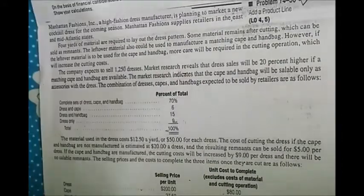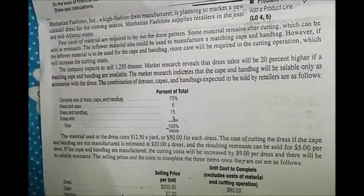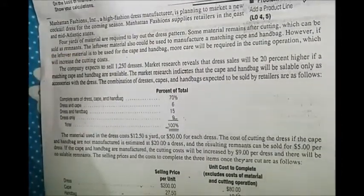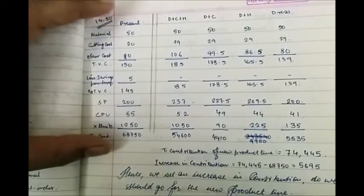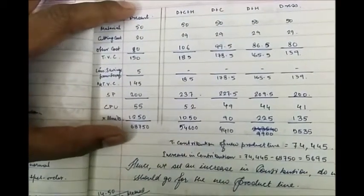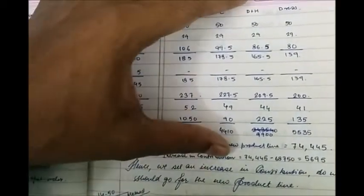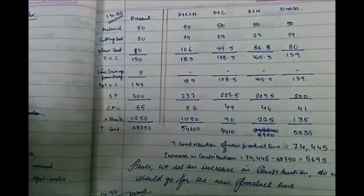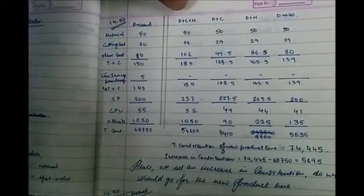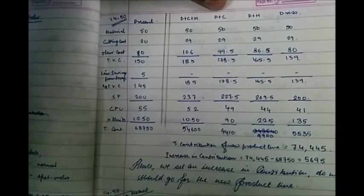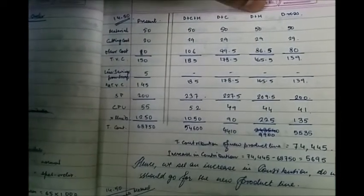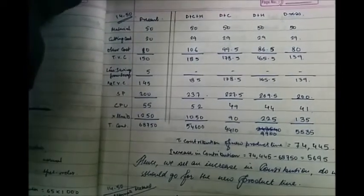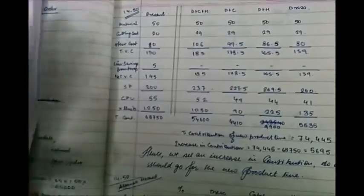Now, how do we actually approach the problem? We will consider two product lines: one is the present product line consisting of dresses only, and the other is the new product line being planned, which has different combinations — dress, cape, and handbag; dress and cape; dress and handbag; and dress only.